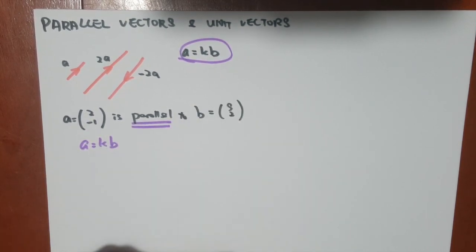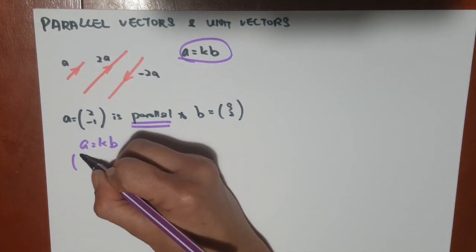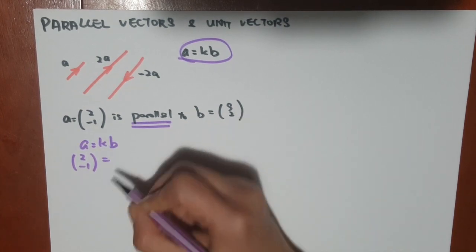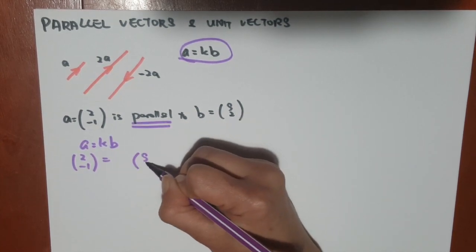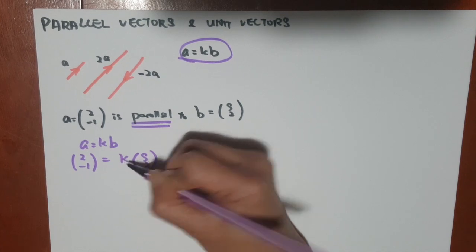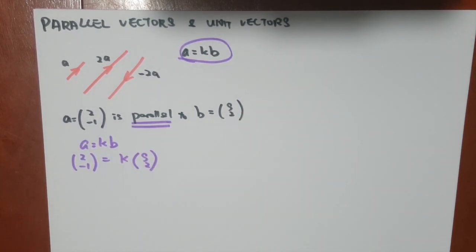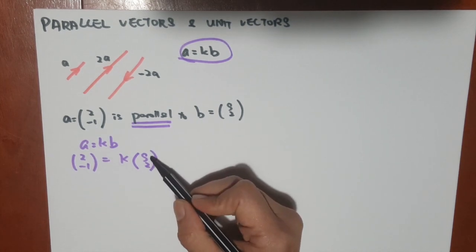So in this situation, my a is (2, -1), and my b is (s, 2). My k is a constant number, but at this moment, I do not know what the number is. In order to find the value of s, we could start by looking at the bottom number first.